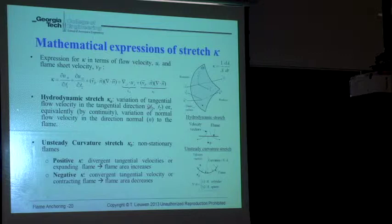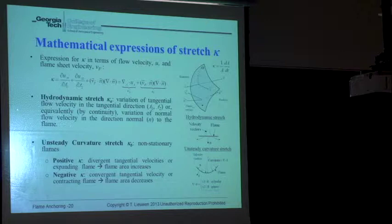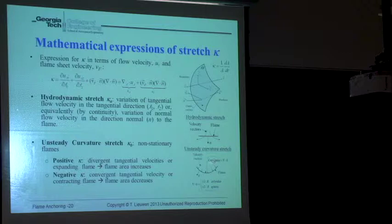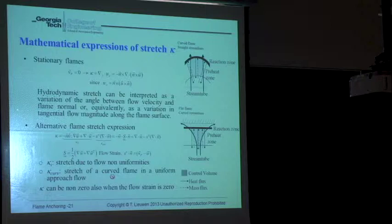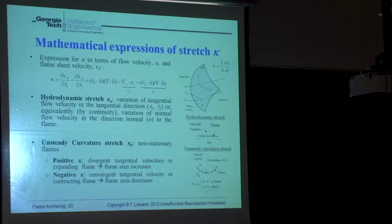For a stationary flame — not moving — v_f is zero, so κ_b is zero, and the only contribution to flame stretch is κ_a. Now let's go back to the curved flame picture: why is this negatively stretched? It's a steady-state flame so v_f · n̂ is zero. It's much easier to use the tangential divergence expression here.